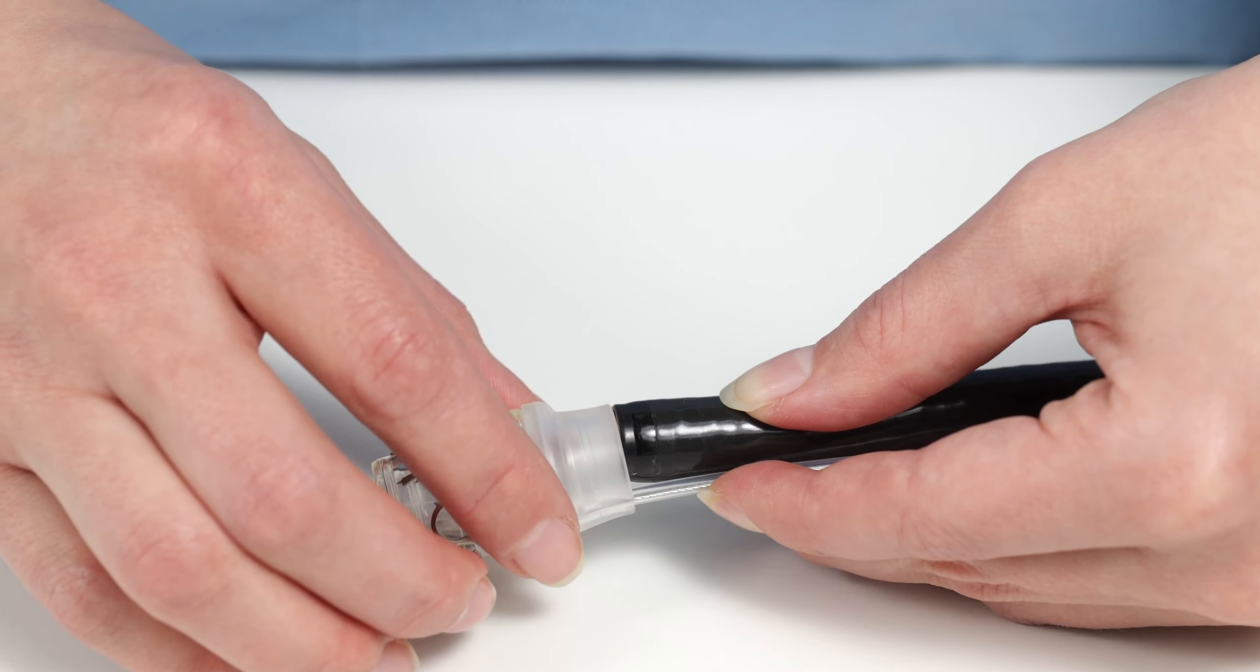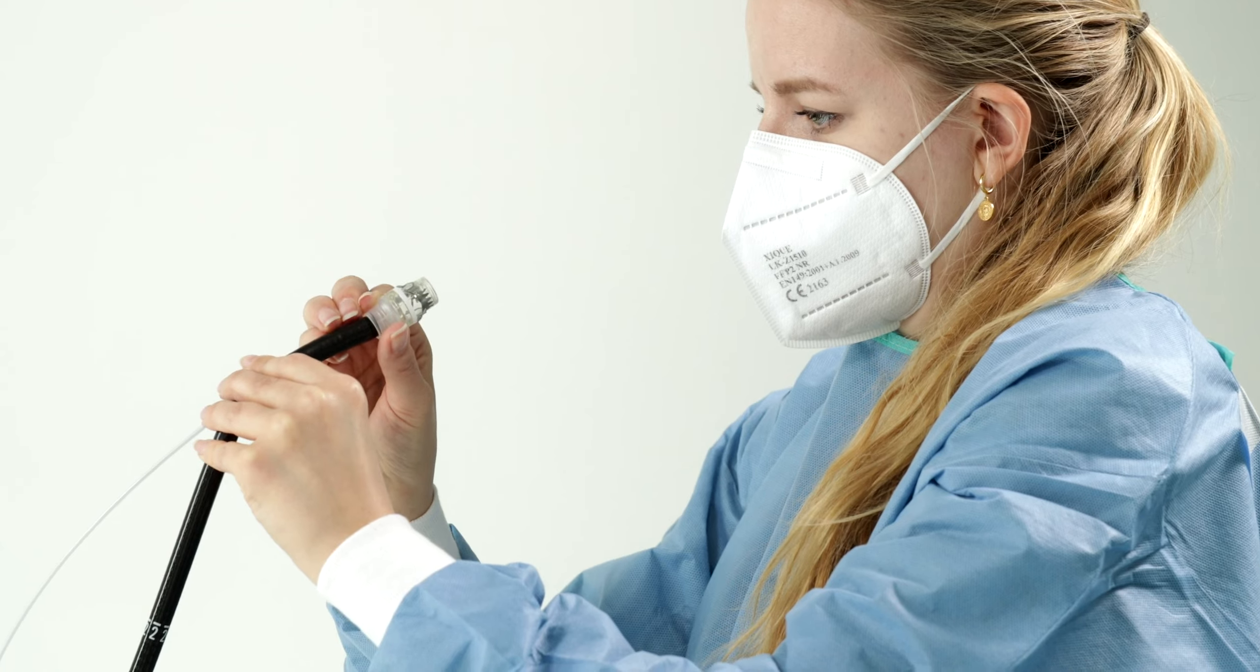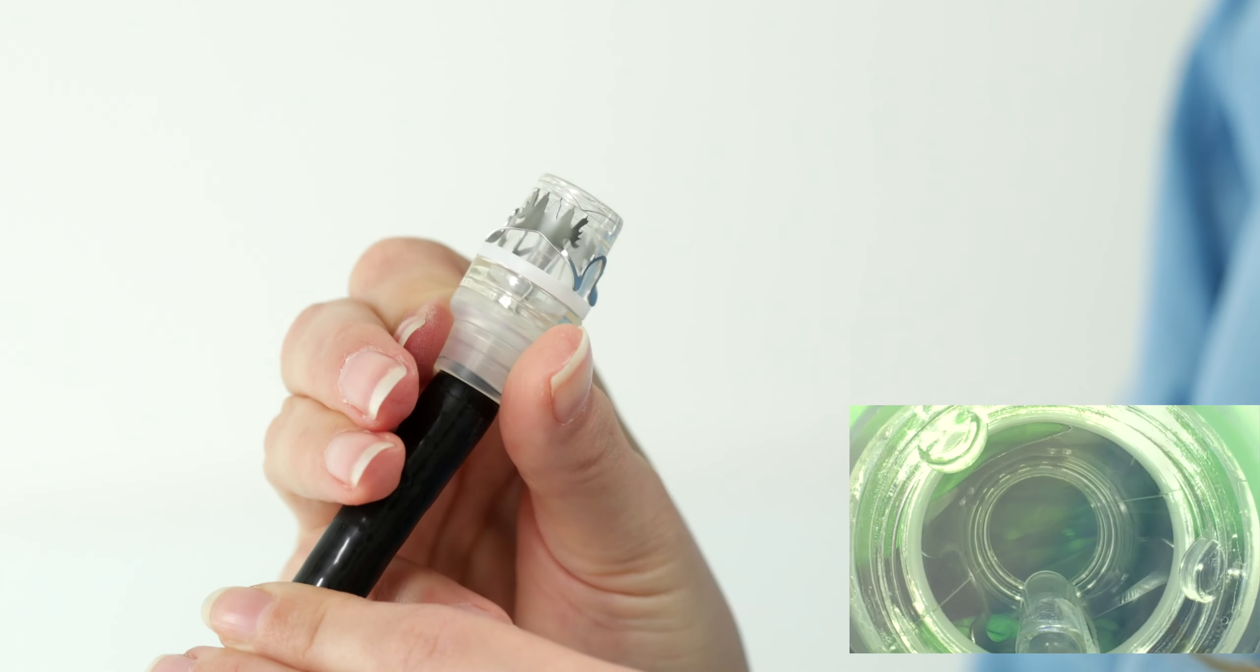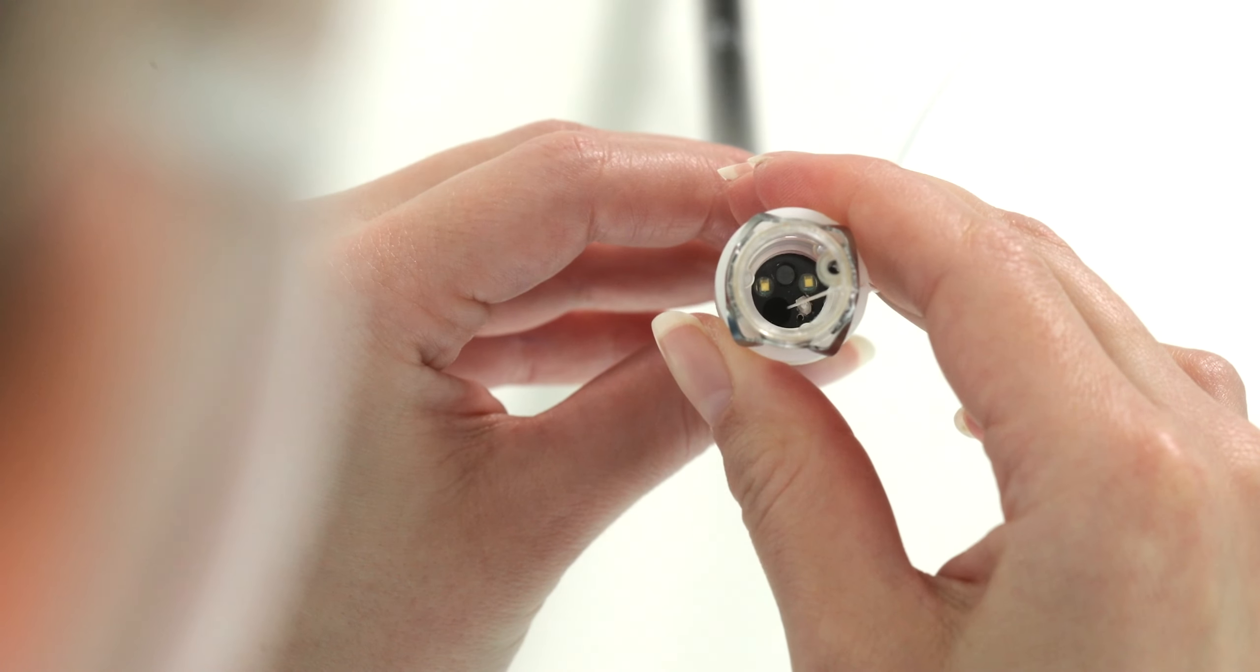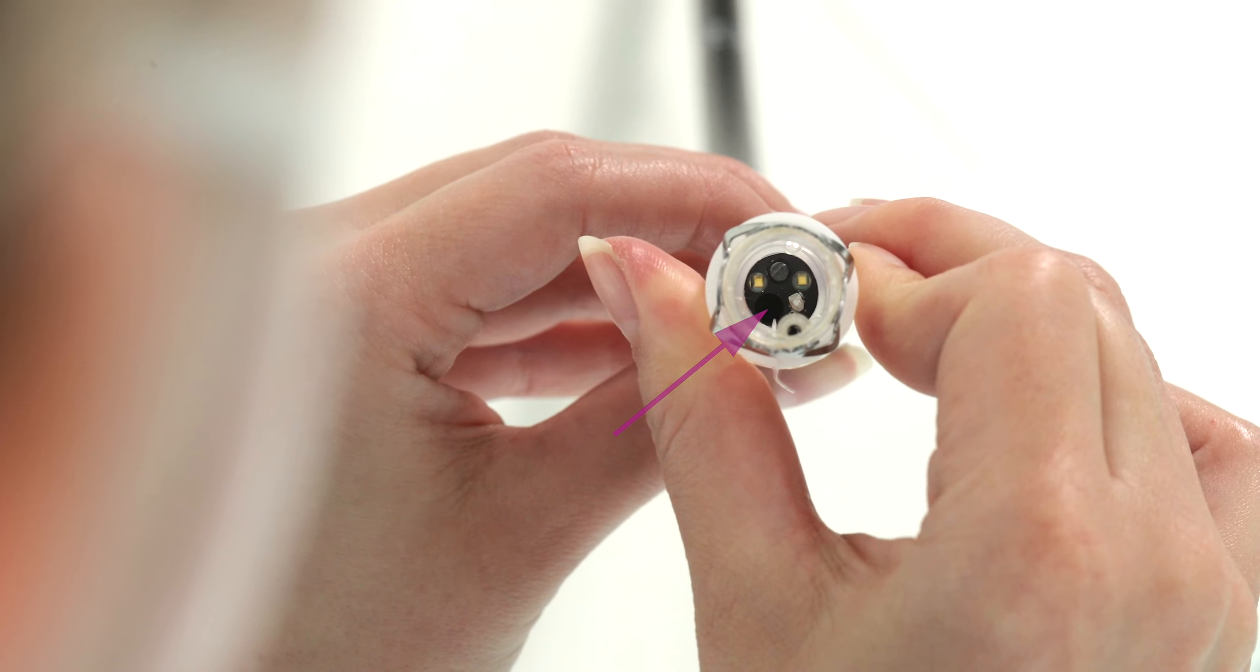To start, place the application cap only lightly on the endoscope tip. The release thread must enter the working channel vertically and not conceal any of the endoscope functions. The working channel should be located directly next to the snare shaft tube, so that the working channel outlet remains clear.